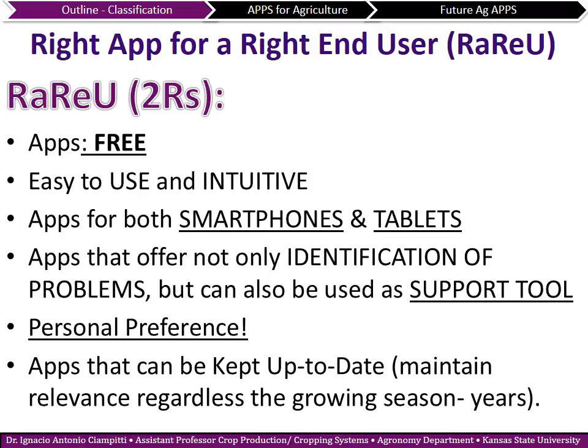Apps can be for smartphone or tablets. There are apps that are not only for identification but also can provide some support tools, and we will go through some examples. Lastly, we have the concept of personal preference — we will see apps that seem very similar, and the difference is just based on personal preference.